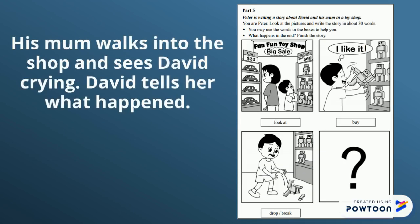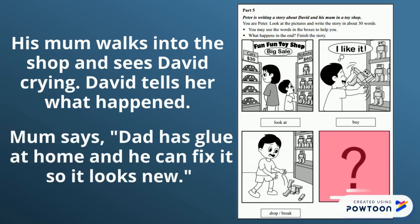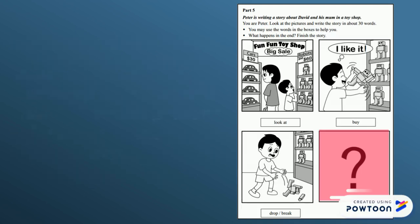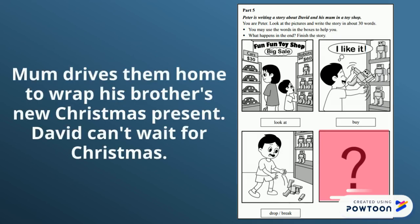His mum walks into the shop and sees David crying. David tells her what happened. As you can see I am on my last picture and I am deciding what happens at the end. What does mum say? Mum says dad has glue at home and he can fix it so it looks new. And then finally, mum drives them home to wrap his brother's new Christmas present. David can't wait for Christmas.